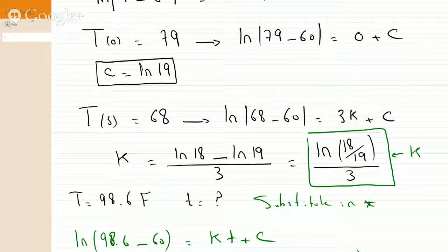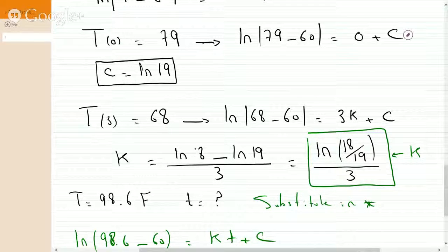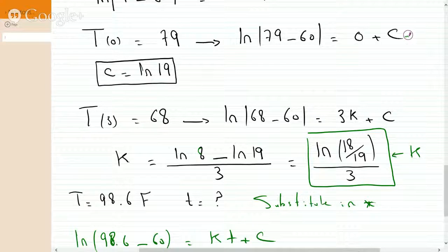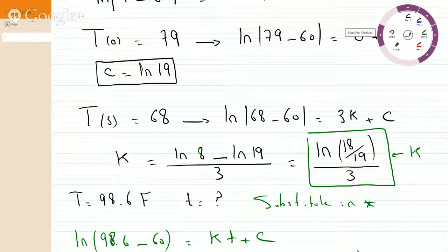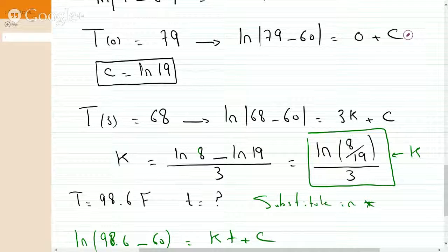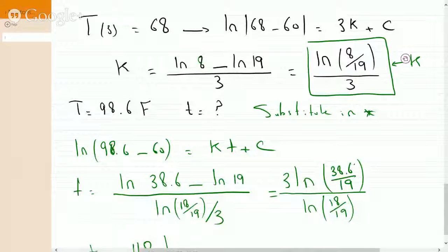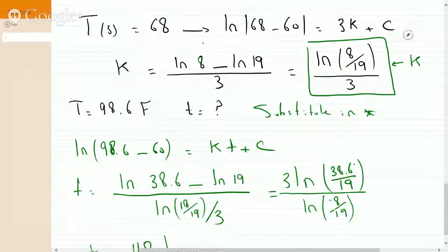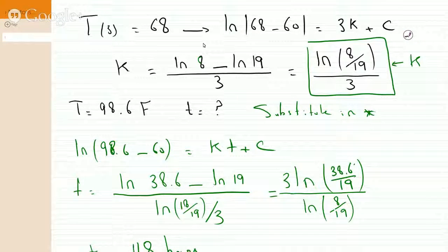Oh, I see. 68 minus 60 is 8, not 18. So let's fix this. This is 8, which makes all the difference here. So 98.6 minus 60 is 38.6. This guy here becomes an 8, and this guy here is an 8. Much more reasonable now.